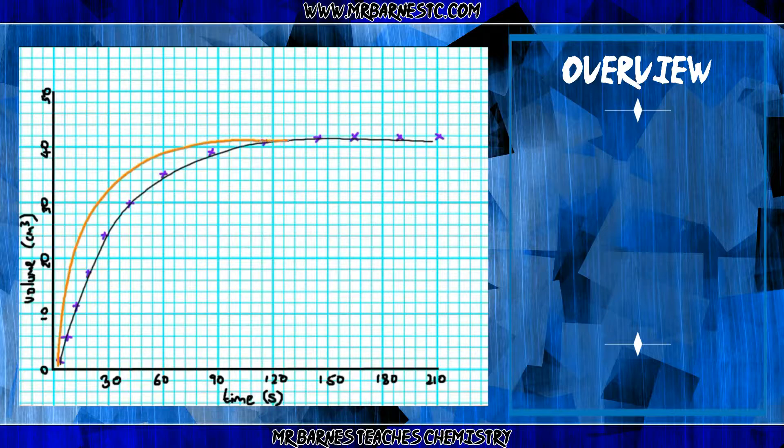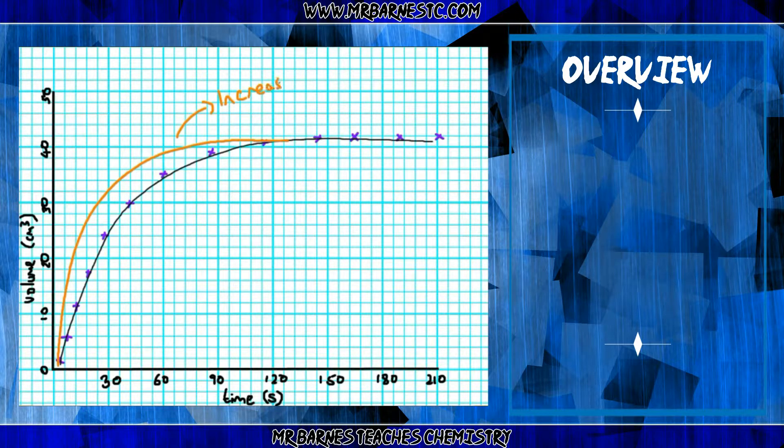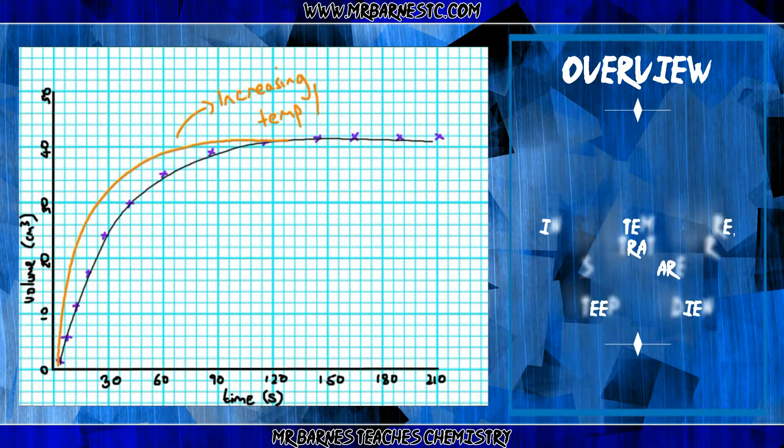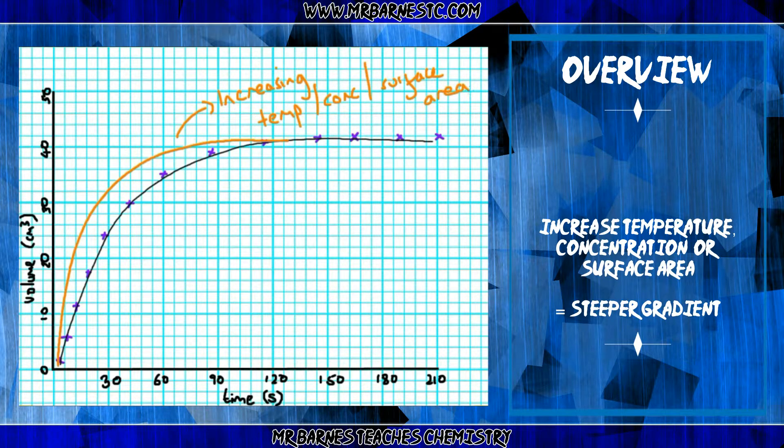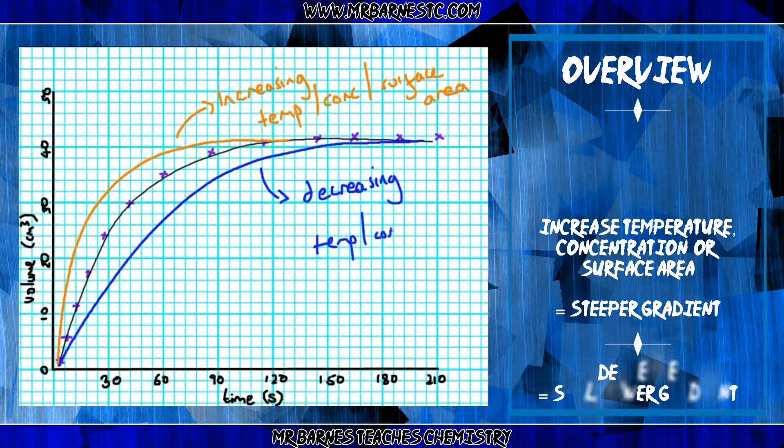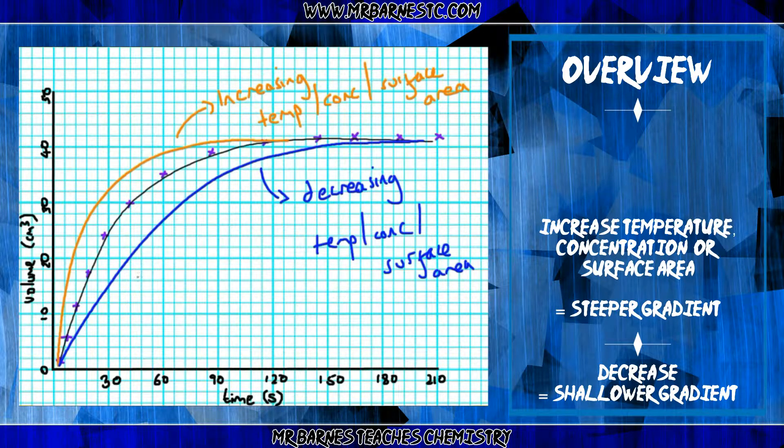So in general, if you're asked to show what a graph would look like if you increase the temperature, concentration or surface area, make sure it's steeper and make sure it finishes at the same point. And similarly, if you're asked to show decreasing the concentration, temperature and surface area, make it shallower, make the gradient less steep.